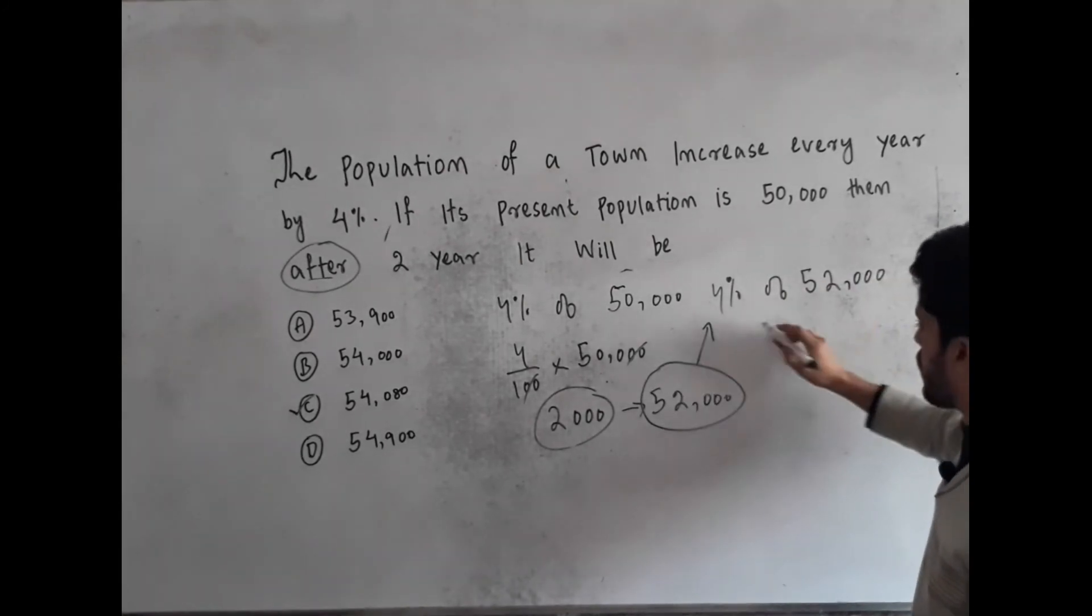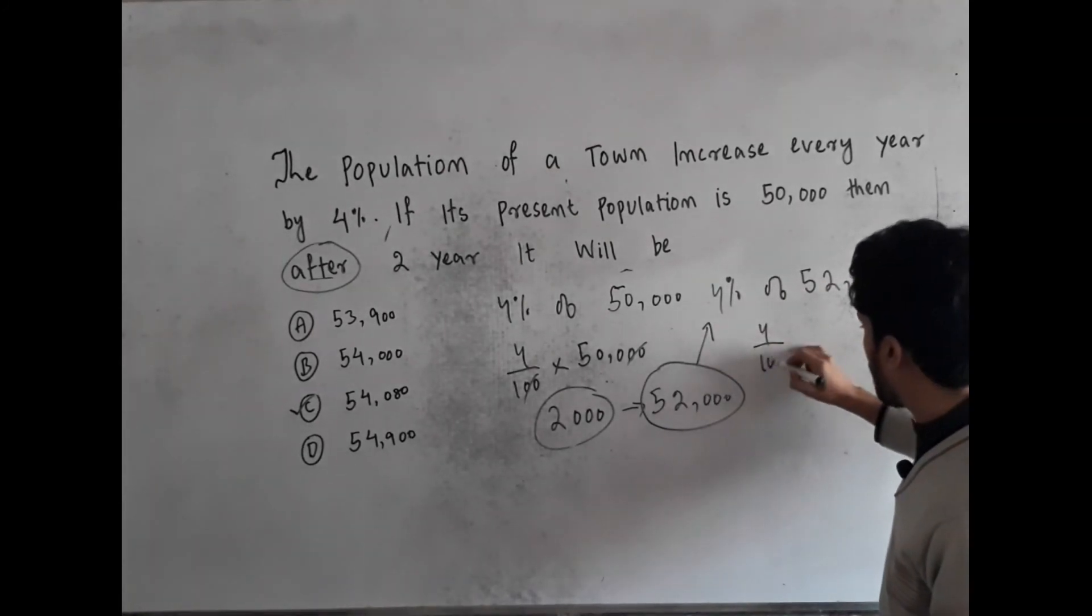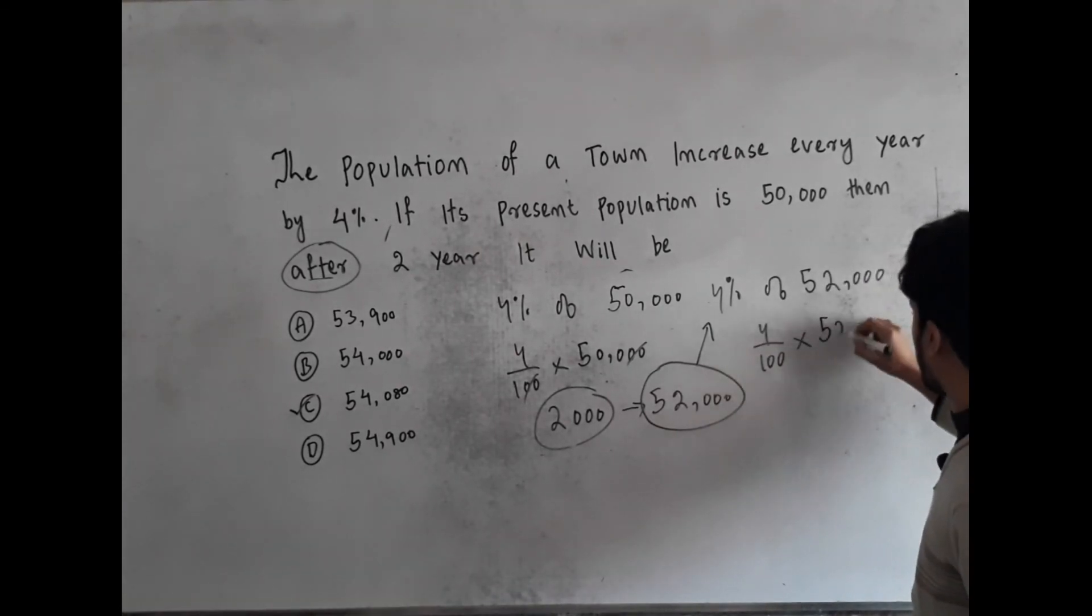This is for the second year. So, 4 divided by 100 multiplied by 52,000.